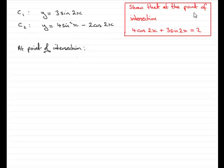And we've got to show that at the point of intersection, 4 cos 2x plus 3 sine 2x equals 2.